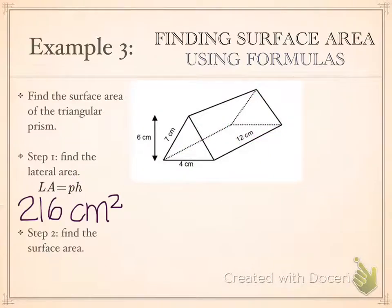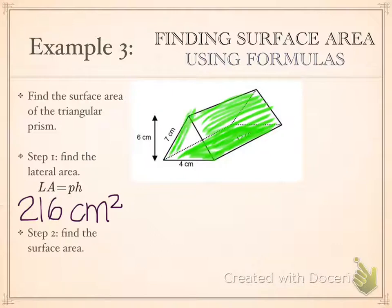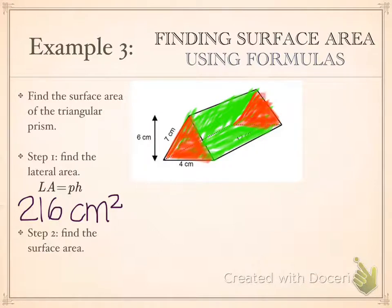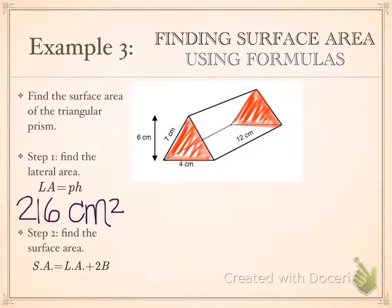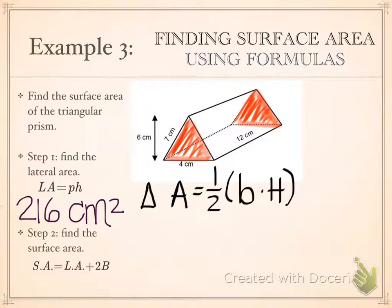So what this means is that I found the area of the top face, the bottom face, and the side face. What this does not include is the area of the triangle in the front or the triangle at the back. So we need to take what we've already measured and add to that the bases — the 2B.